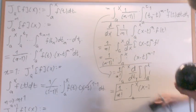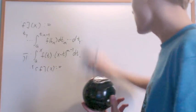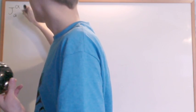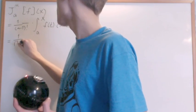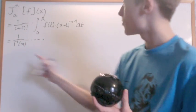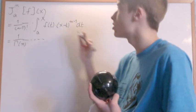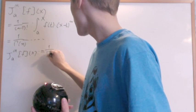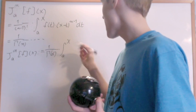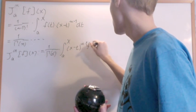Now that we have this proof, we use it to extend the integral to fractional powers. We replace (n−1)! with the gamma function Γ(n), which extends us into all positive real numbers. So J^α_a f(x) is defined to be 1 over Γ(α) times the integral from a to x of (x−t)^{α−1} f(t) dt.